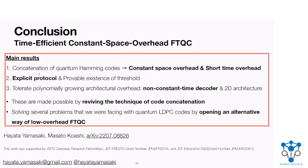In conclusion, we achieved fault-tolerant quantum computation that achieves time-efficient and constant space overhead FTQC. Concatenation of quantum Hamming codes leads to a constant space overhead and quasi-polylogarithmic time overhead. We constructed an explicit protocol and proved the existence of non-zero thresholds. Our analysis showed that the protocol can tolerate polynomial growing architectural overhead, even with non-constant-time decoders. Remarkably, these are made possible by reviving the technique of code concatenation. In this way, we solved several of the problems faced with quantum LDPC codes and opened an alternative way of low-overhead FTQC, while further investigation towards practical implementation is left for follow-up research.